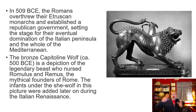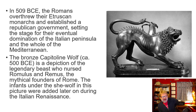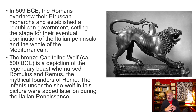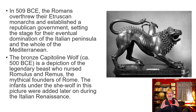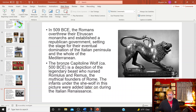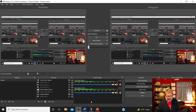The bronze Capitoline Wolf, around 500 BCE, is a depiction of the legendary beast associated with Romulus and Remus — if you go to Rome you'll see this sculpture with babies attached, though those were added later. This sculpture became a symbol for Roman society. If you're a Star Trek fan, that's reportedly where 'Romulans' comes from. The story of Romulus and Remus is interesting, and the Romans used this sculpture as a kind of representation of their culture.